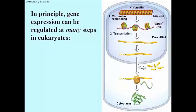During development, previously heterochromatic DNA packed around silent genes might need to be opened up in order that genes that had not been expressed to that point are available for expression, so that cells can differentiate.